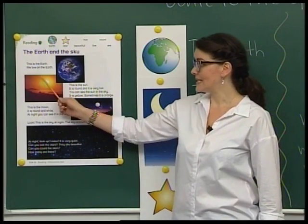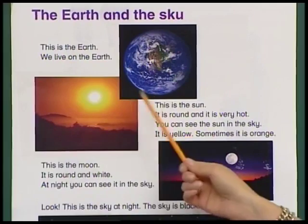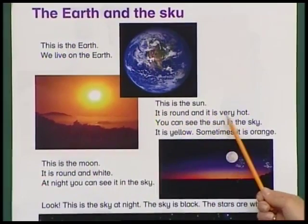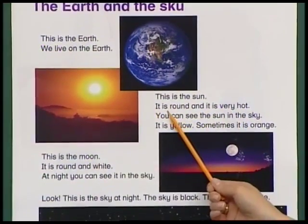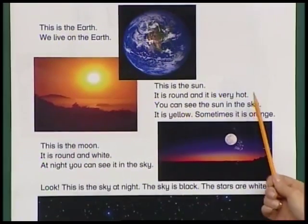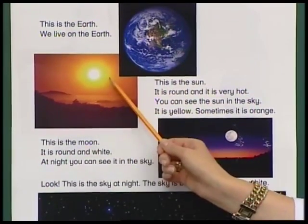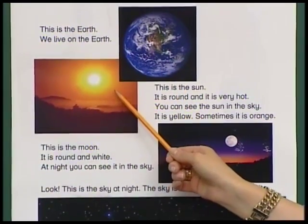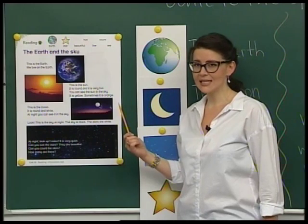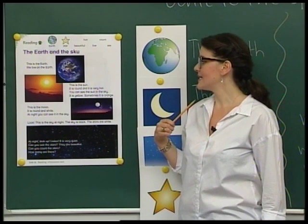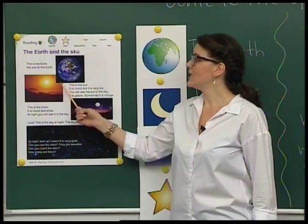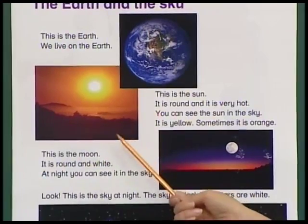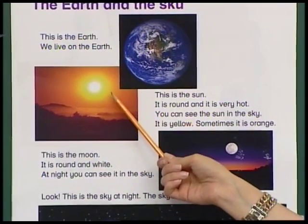And what is it? This is the Sun. It is round and it is very hot. Round. The Earth is round and the Sun is round. And it's very hot. And you can see the Sun in the Sky.